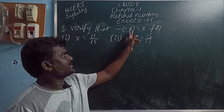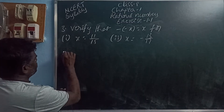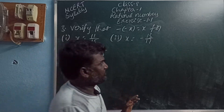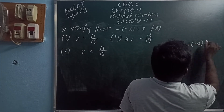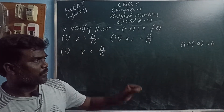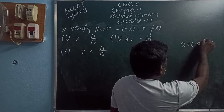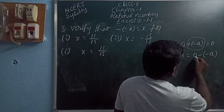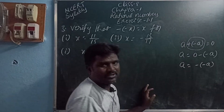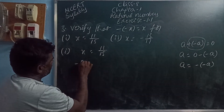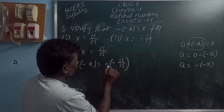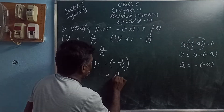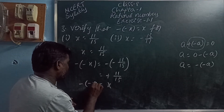Third problem: Verify that minus of minus x equals x, for x equal to 11 by 5. We know that A plus minus A equals zero. A number added to its inverse gives the identity element. So plus of minus A means minus A. Therefore A equals zero minus of minus A, giving us minus of minus A. Here x equals 11 by 5. Verify: minus of minus x equals minus of minus 11 by 5. The negative of a negative rational number is positive. That is plus 11 by 5, which is x. So minus of minus x equals x.